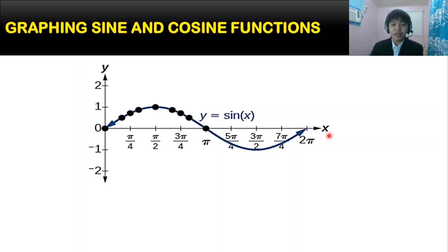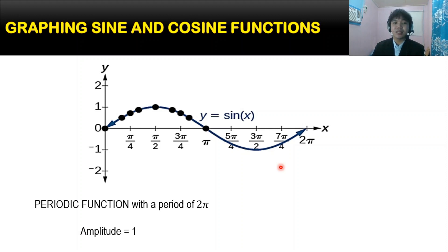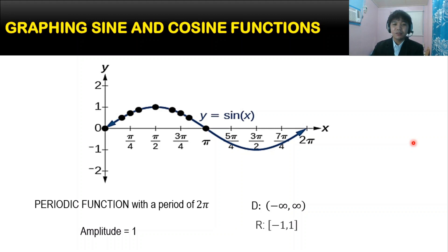Here is the graph of our sine function. We know that this is a periodic function with a period of 2π because the values of our function repeat after the interval of 2π. It also has an amplitude of 1 — the amplitude is the farthest distance from our x-axis, so the peak of our graph is equal to 1. For the domain, it is the set of all real numbers, and for the range, the value of y goes from negative 1 up to positive 1.